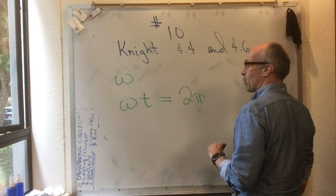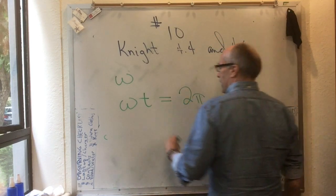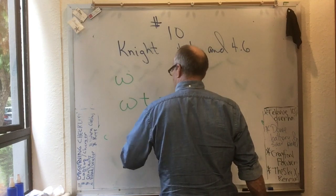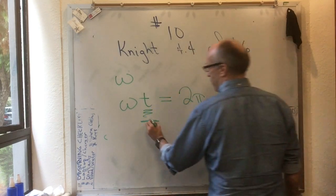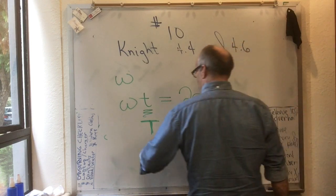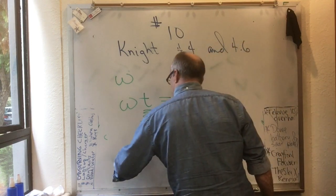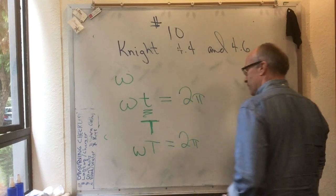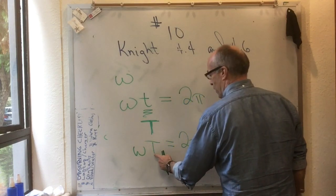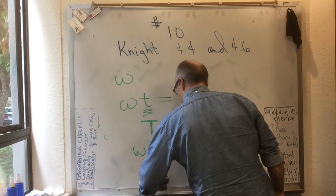And the special time symbol that we use for the time to go exactly around once is capital T. So here we've just learned that omega times capital T is equal to 2π. That's the time to go around once, and it's called the period.